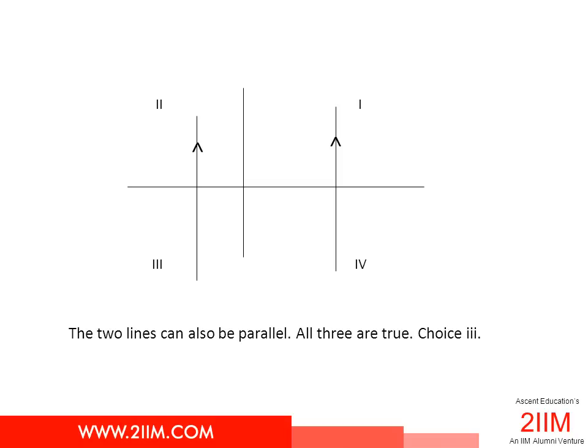The two lines A and B can also be parallel to each other and therefore not intersect at all. We find that the lines can intersect in any quadrant or not intersect at all. All three statements given in the question are found to be true, and the answer is choice three.